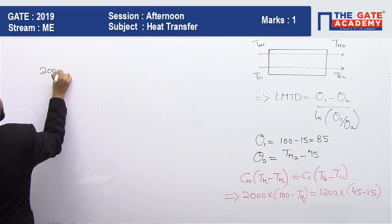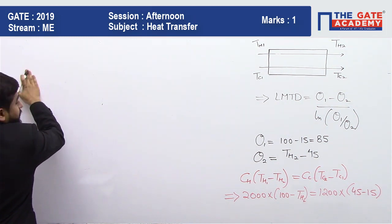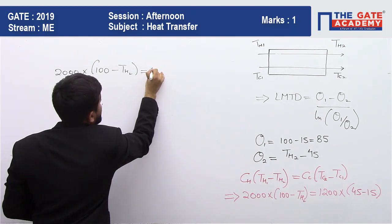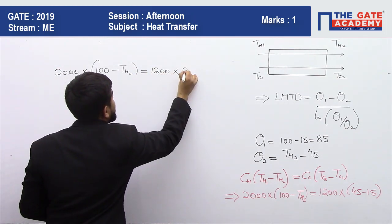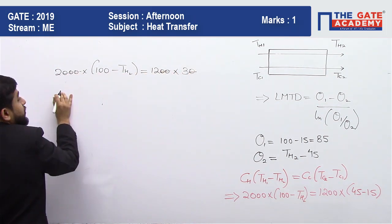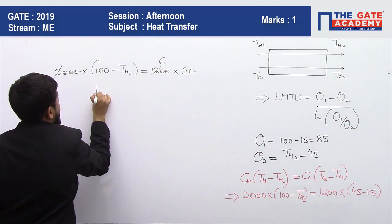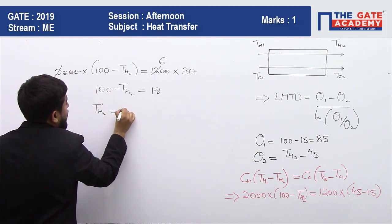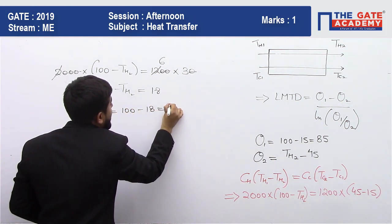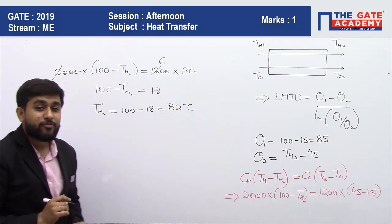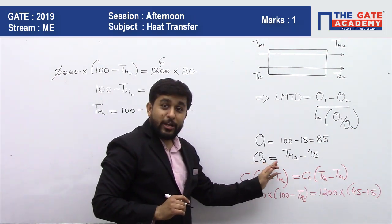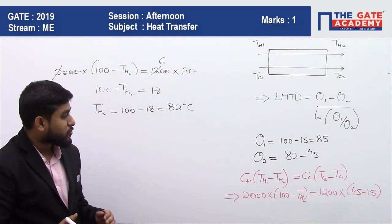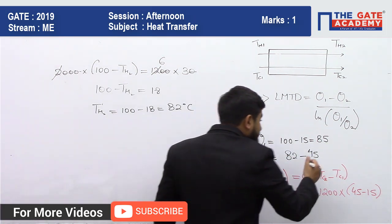So: 2000 × (100 − TH2) = 1200 × (45 − 15) = 1200 × 30. Cancelling the common zeros gives 2 × (100 − TH2) = 6 × 30 / 10, simplifying to 100 − TH2 = 18, so TH2 = 100 − 18 = 82°C. The exit temperature of the hot fluid is 82°C. Substituting, θ2 = 82 − 45 = 37°C.